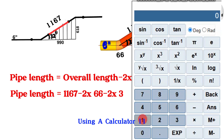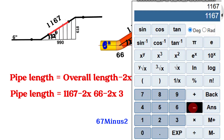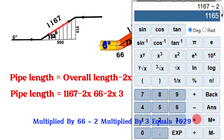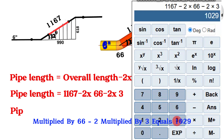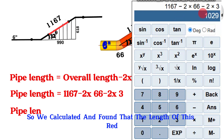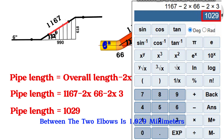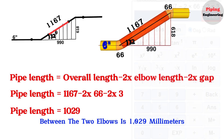Using a calculator, 1,167 minus 2 multiplied by 66 minus 2 multiplied by 3 equals 1,029. So the length of this red-colored pipe between the two elbows is 1,029 millimeters.